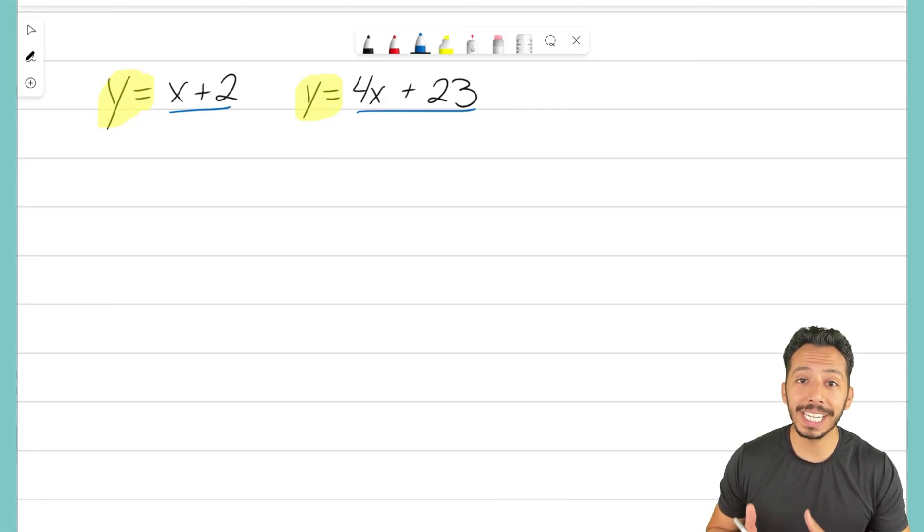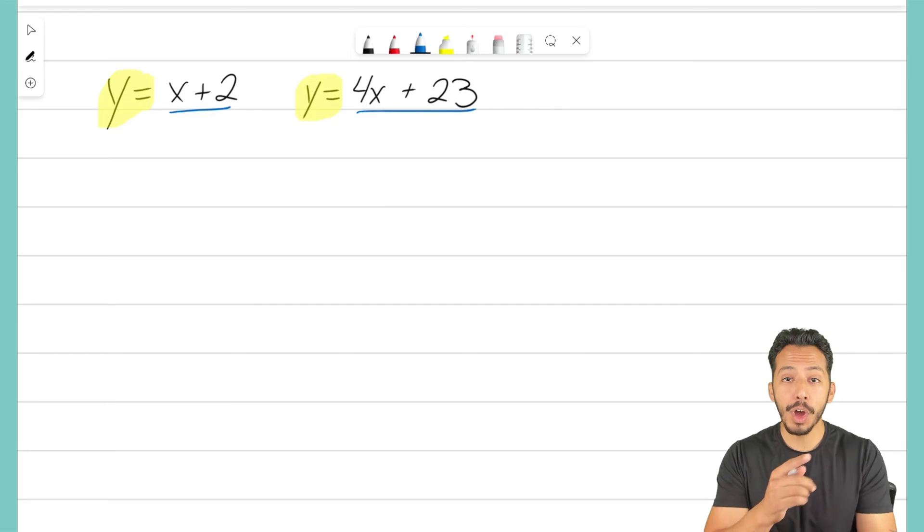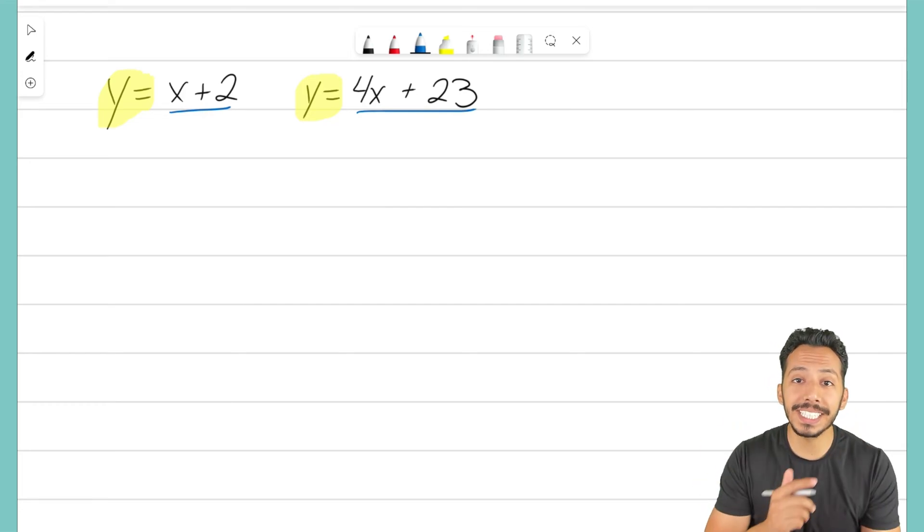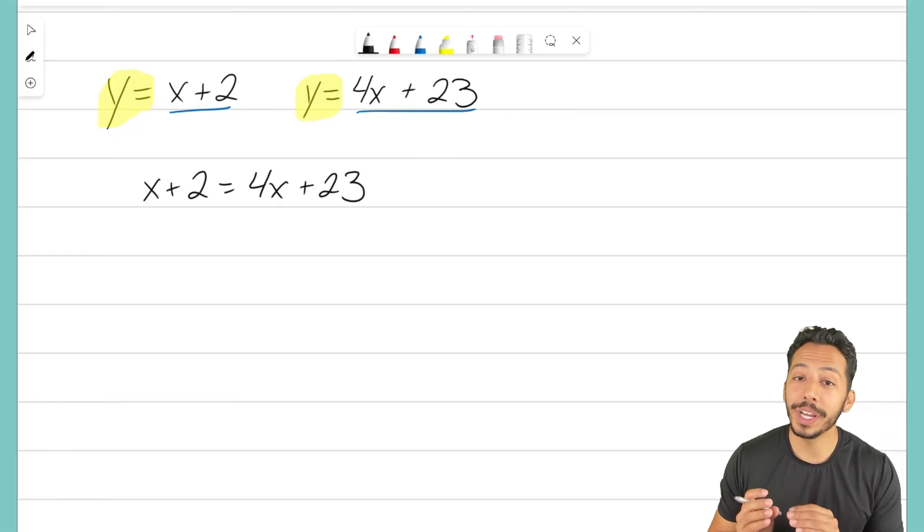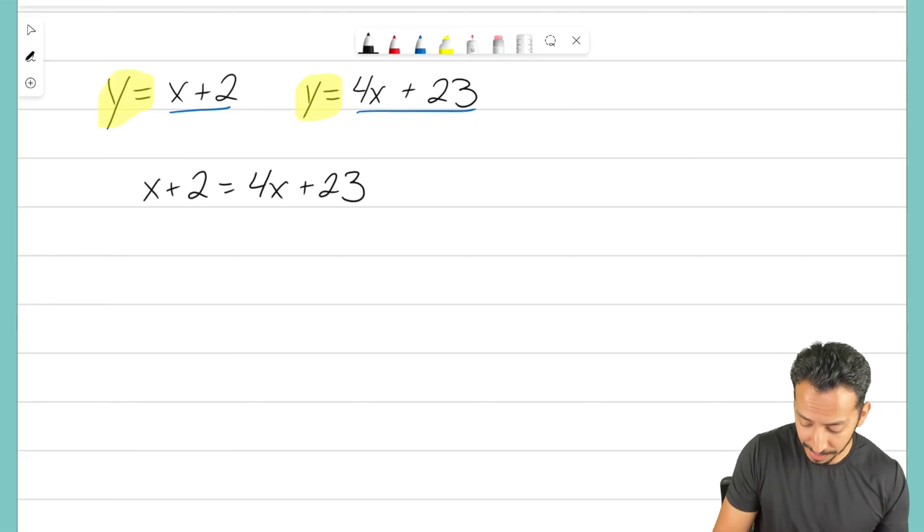So now we're going to use the equal values method to solve for that point where these lines intersect. So again, I know that x plus 2 is going to equal 4x plus 23. We know that they are equal because they both equal y. Now all we have to do is solve that for x. We want to get x by itself. We want to isolate our variable. So let's go ahead and start doing that.